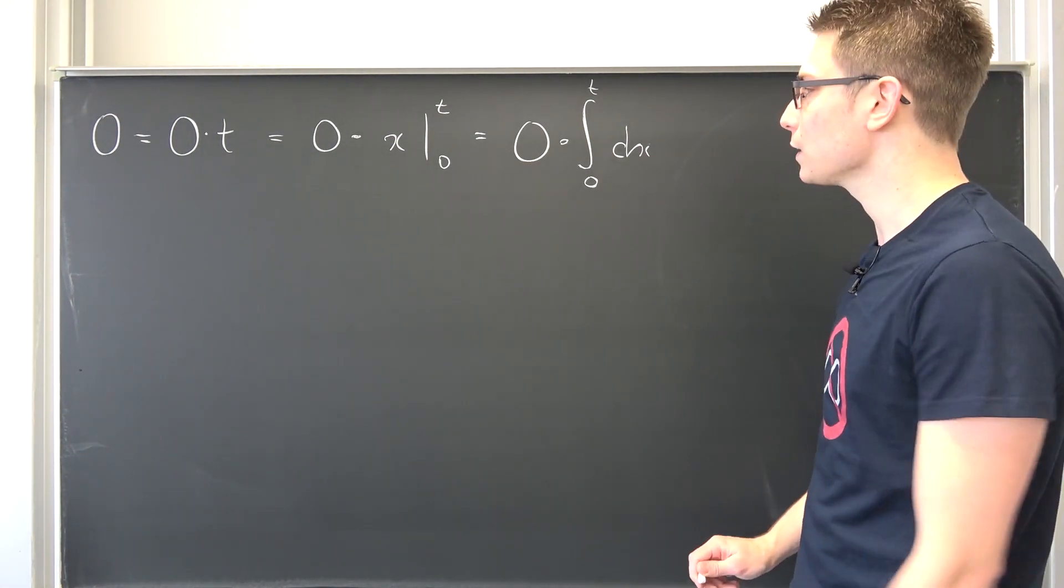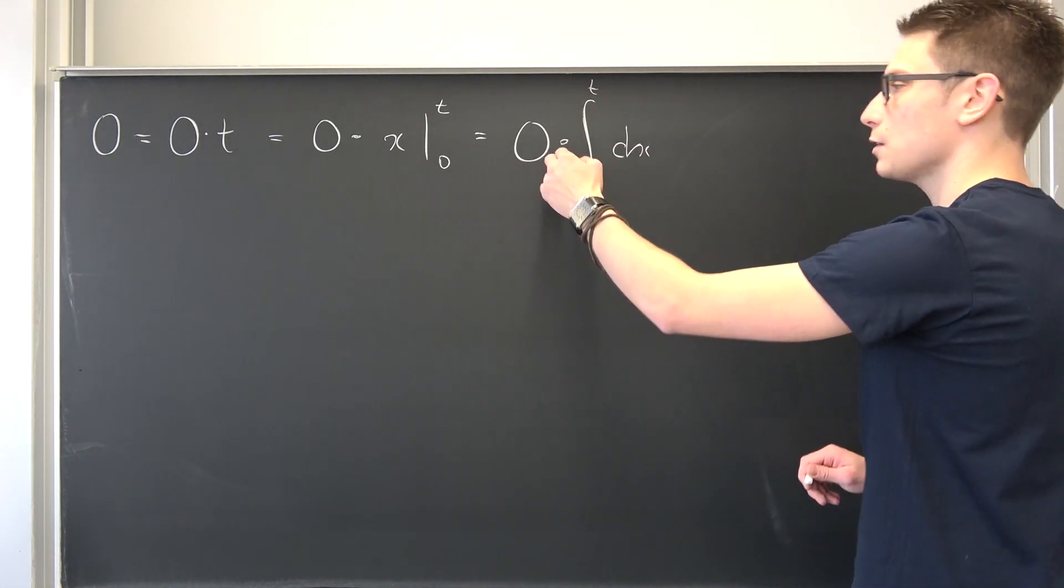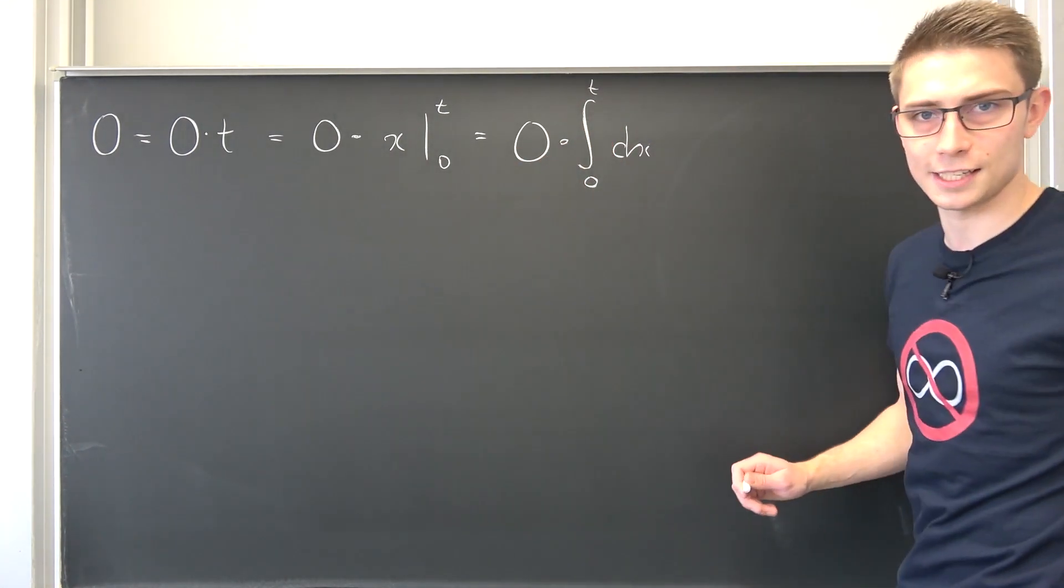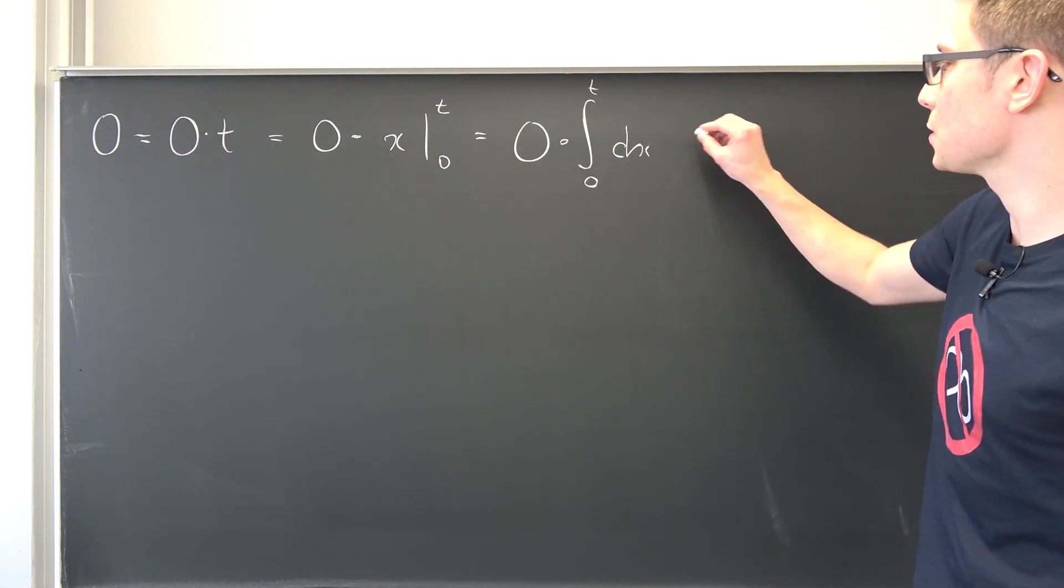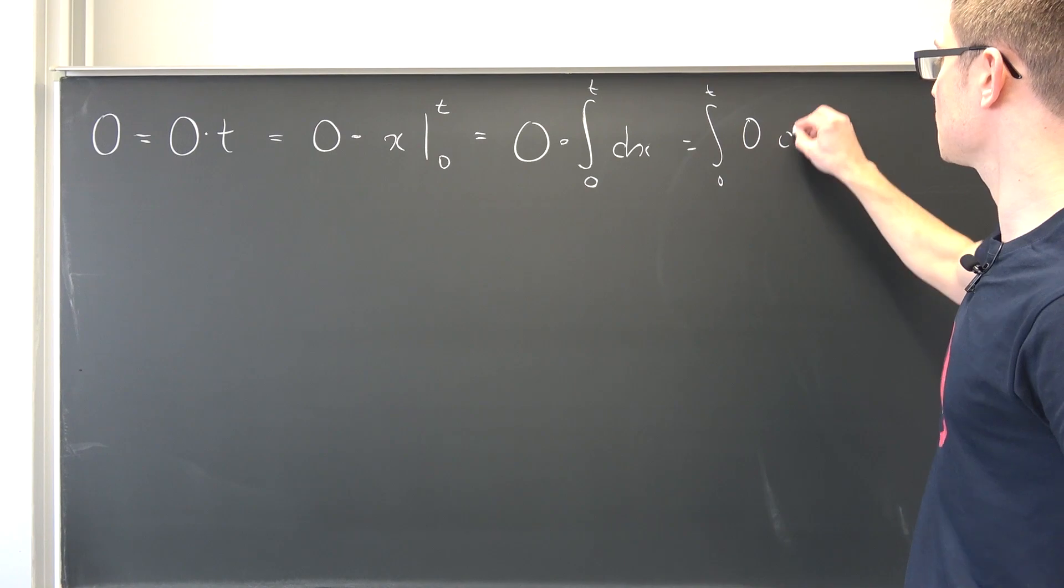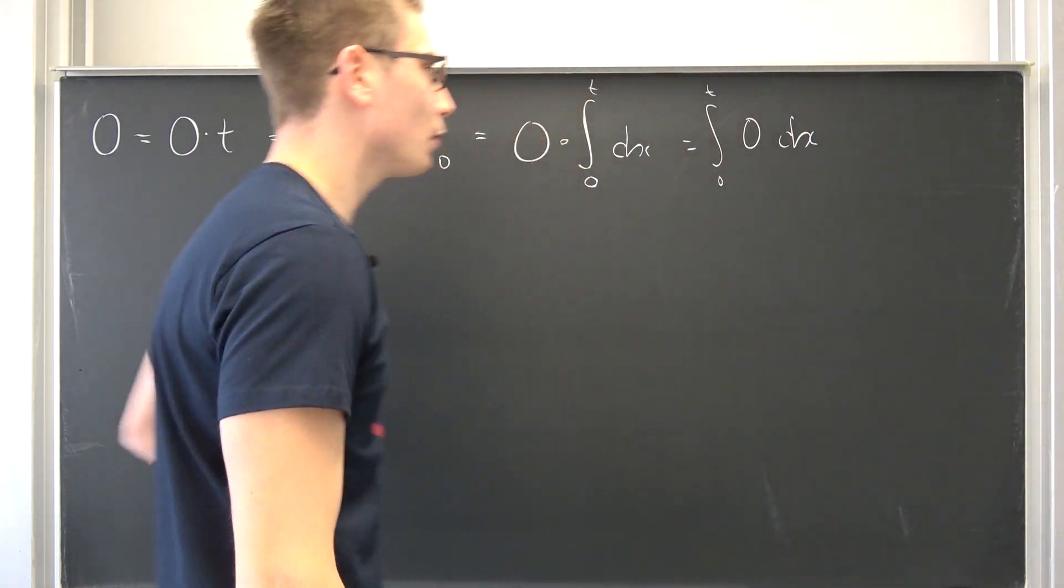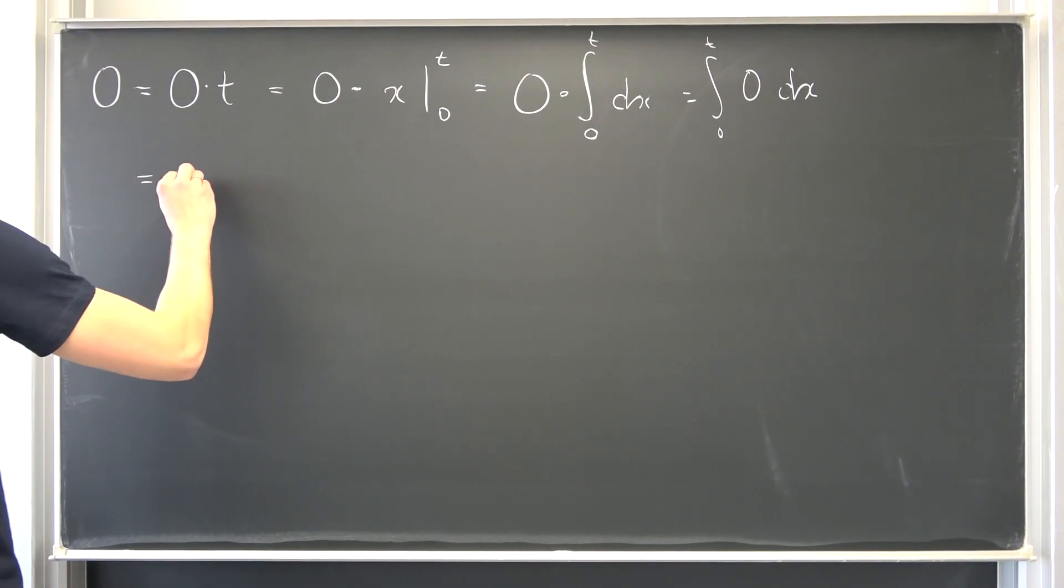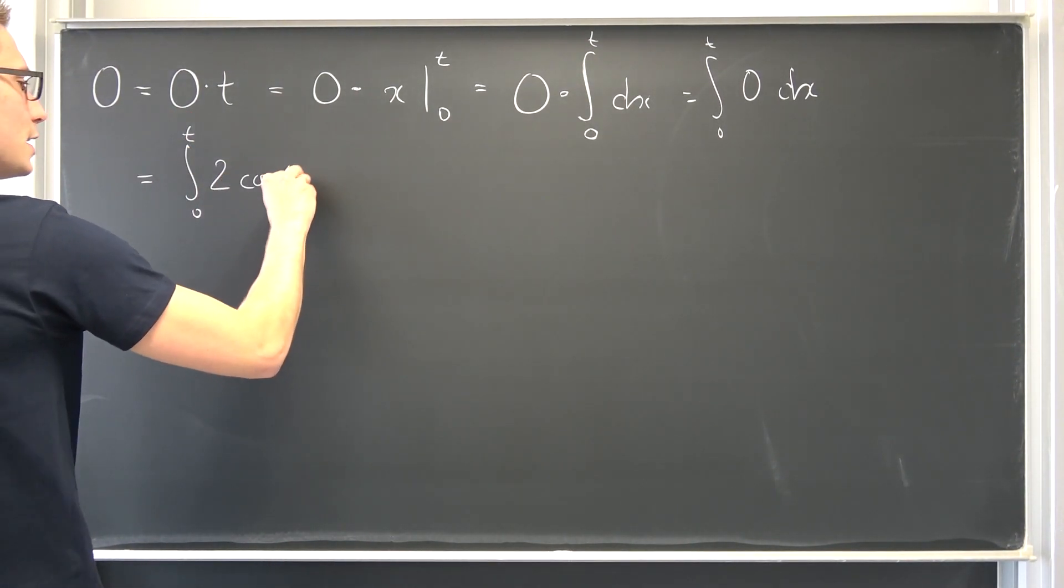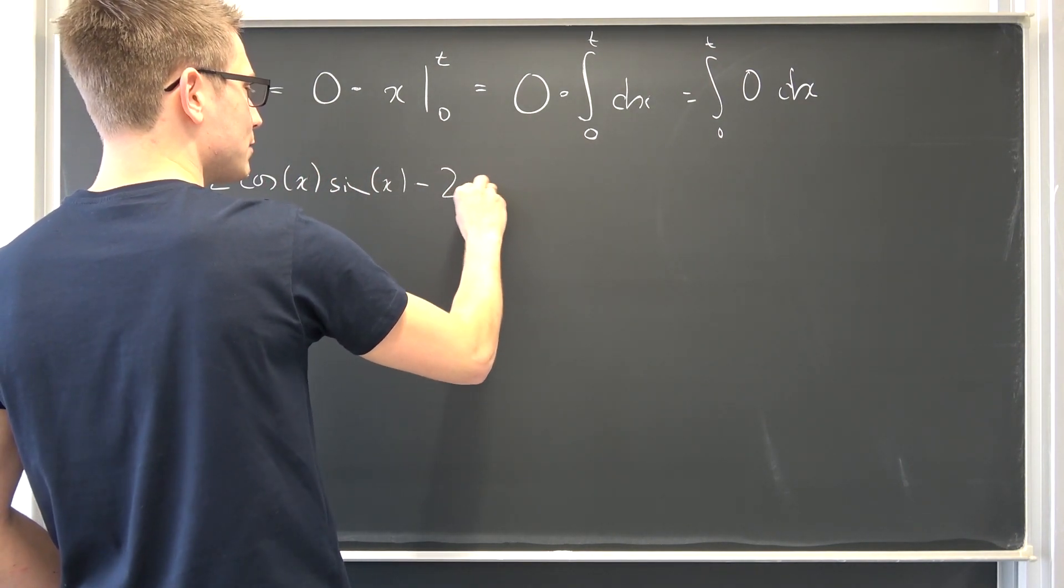Now, you might know from calculus that the integral is a linear operator. If you have a constant times an integral, it's just the integral of the constant. So why not bring the 0 to the inside? Integrate from 0 to t of 0 dx. Now, what is a 0? If you're a smart boy, you might notice that 0 is nothing other than 2 times the cosine of x times the sine of x minus the very same thing.